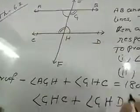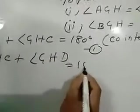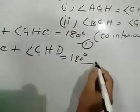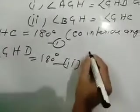Because they are on same straight line. Sum of the two angles on the same straight line is 180 degrees. You make it equation number 2 and write linear pair.